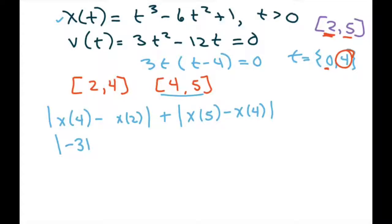And then when you plug in 2, you're going to use your calculator: 8 minus 24 plus 1, that gives you negative 15. So you're going to have minus negative 15.